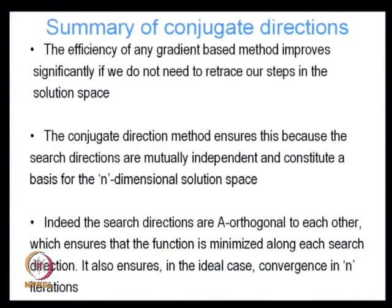We systematically keep reducing the error in each of those search directions and they never recur again. Because of this, the conjugate directions method is sure to converge in n iterations. That is true in the ideal case, but in the real world, accumulation of round-off errors means the conjugate directions will no longer exactly satisfy the orthogonality condition, and the convergence rate will be somewhat less. We will talk about those things specifically in the context of the conjugate gradient method.